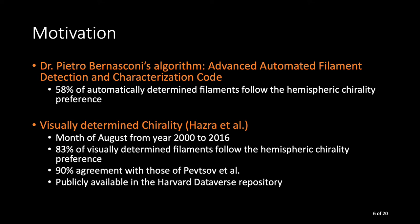This algorithm by Bernasconi is also called Advanced Automated Filament Detection and Categorization Code, which works as classical image processing. Our data mining lab members conducted research and compared the Bernasconi's code result with their visually identified filament chirality. This research was conducted on solar images taken in the month of August from year 2000 to 2016. Although the method to identify chirality was same in the Bernasconi's code and Hazara's visually determined research, the results were drastically different. And the latter shows more alignment with the hemispheric chirality preference. Also, it is more in agreement with the result of other studies. These results are easily accessible from Harvard Dataverse repository.